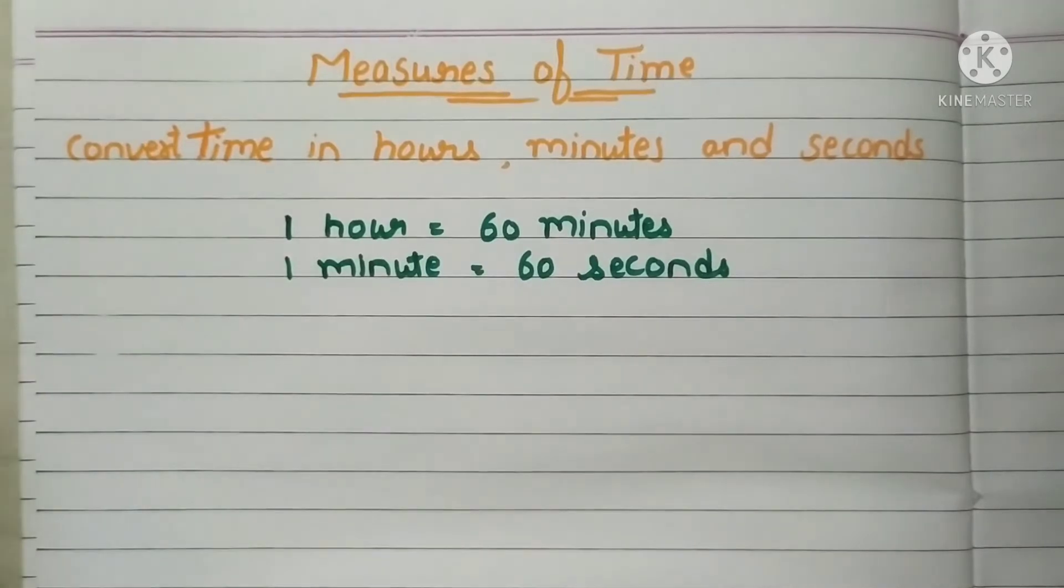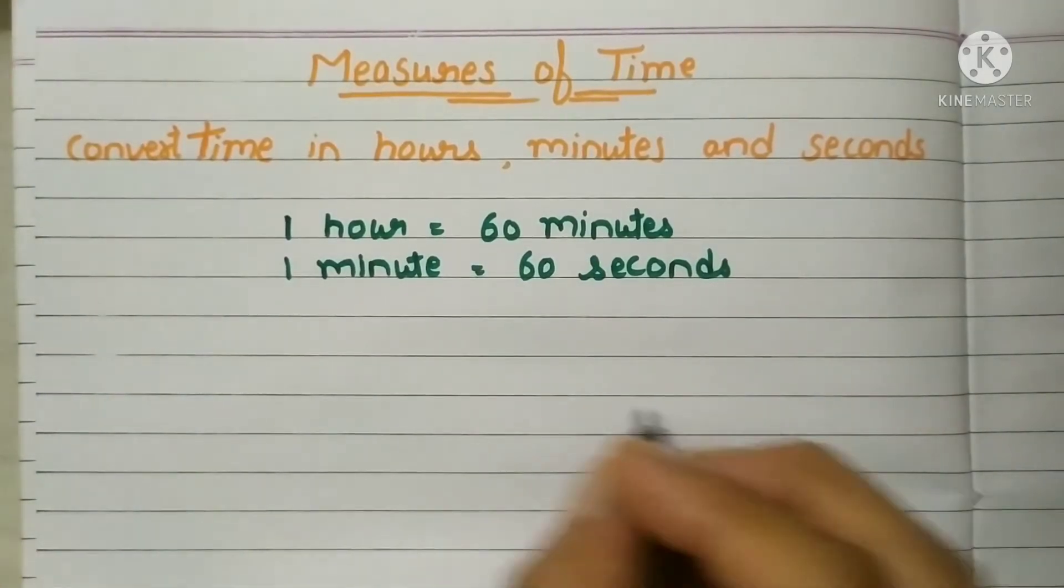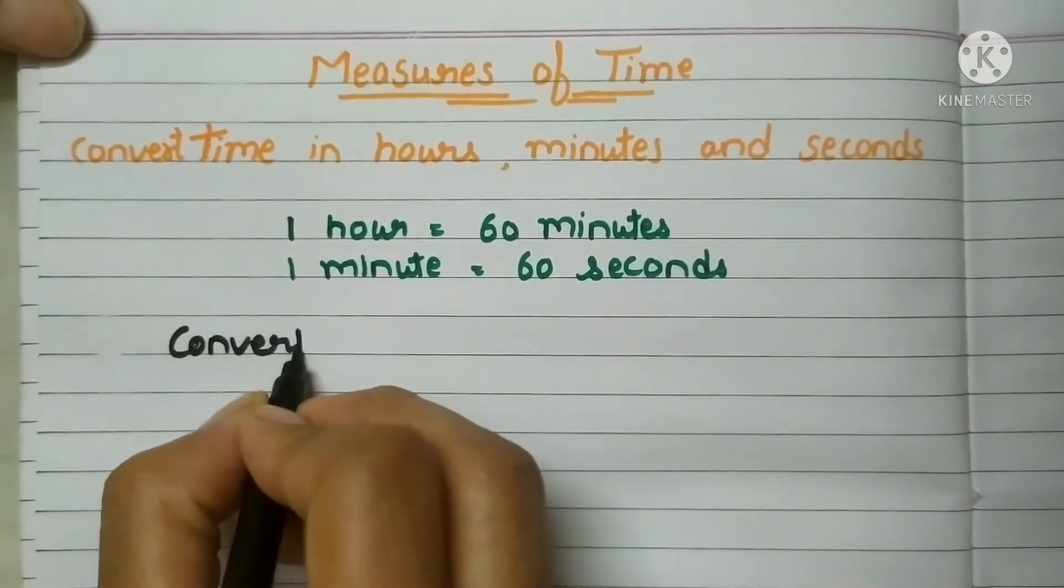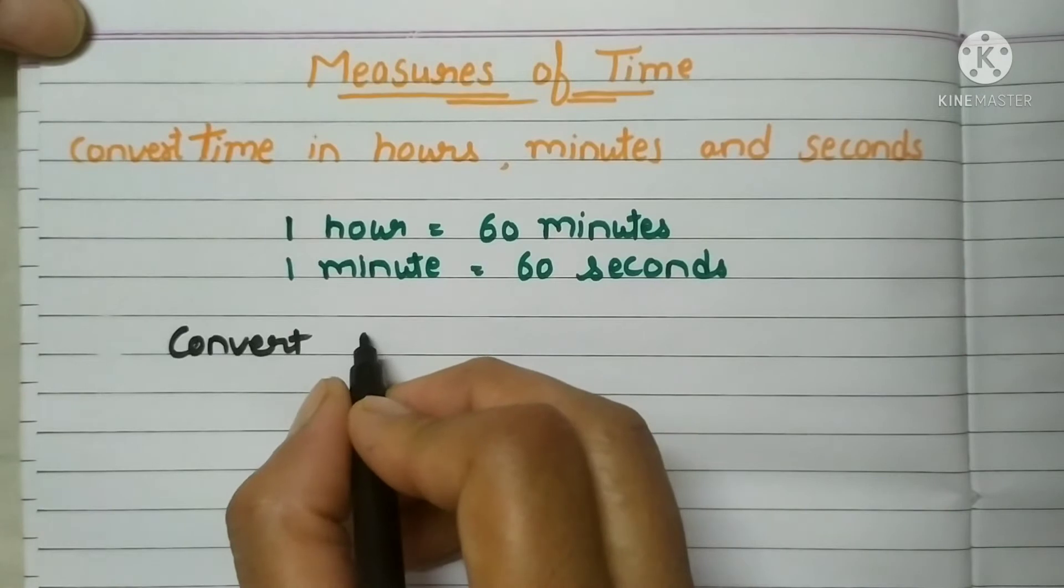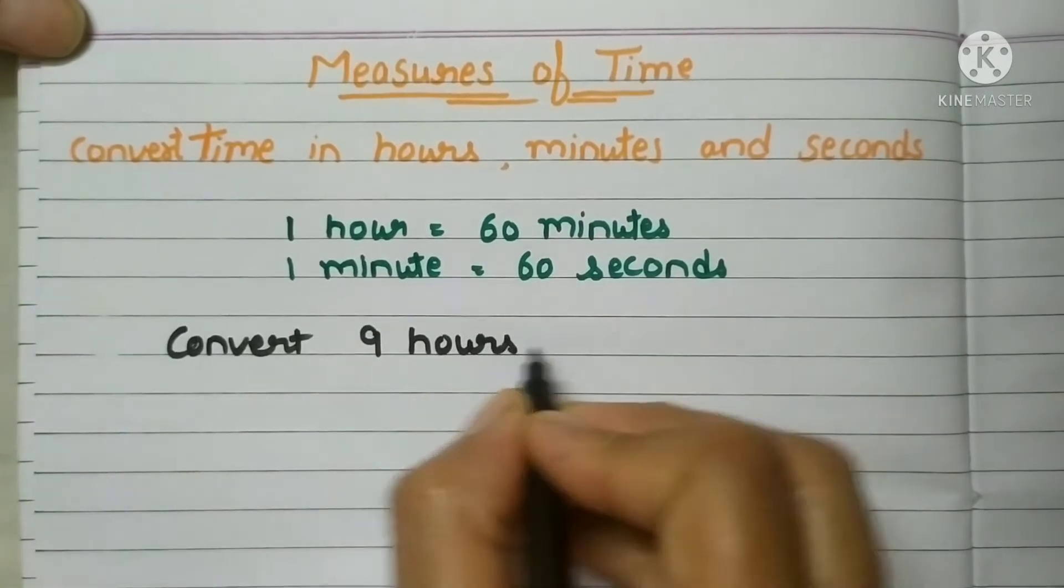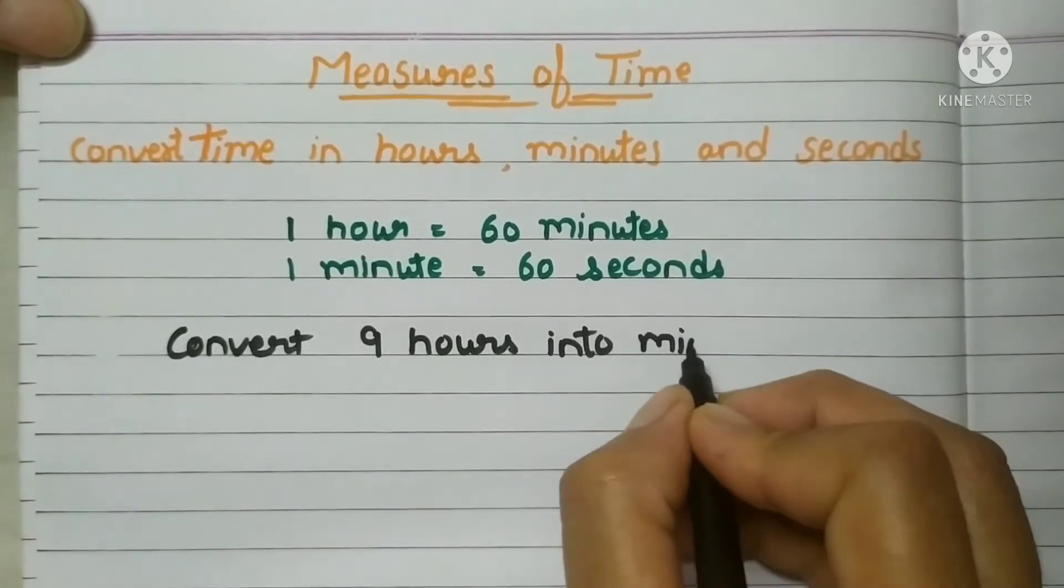So we have to remember these two formulas only and this is very easy. We have understood this in the last video. So let's start how to do the conversion. If we have to convert, let's start with a simple example: 9 hours into minutes.